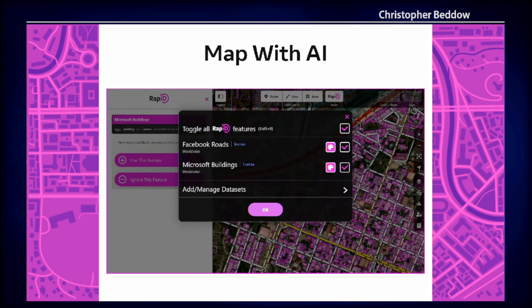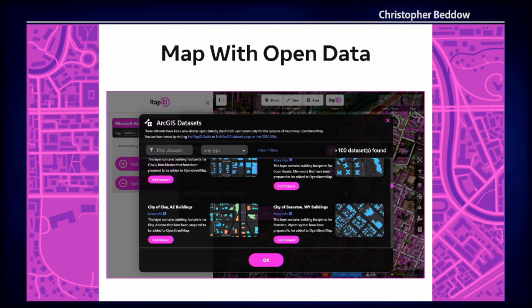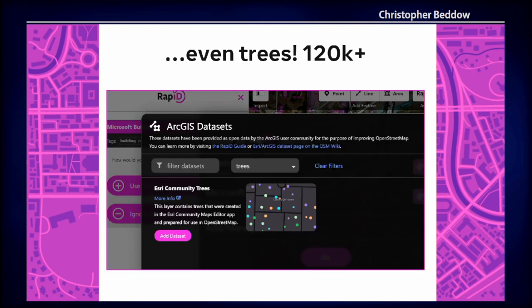If you click 'Add/Manage Datasets' at the bottom, it takes you into this ArcGIS datasets dialog. Scrolling through, you'll see there are more than 100 datasets, and a lot of these are from city governments — things like buildings, addresses, and other types. You can filter them by class or search for the name of a city, and the dropdown box gives you types to choose from. One of the interesting types in the dropdown is even including trees. Esri has crowd-sourced these trees from GIS users who went out and surveyed their locations — quite a large dataset, something like 120,000 as of today and always increasing, covering a lot of the US and a few other places in the world.